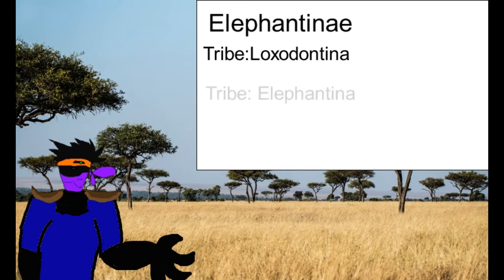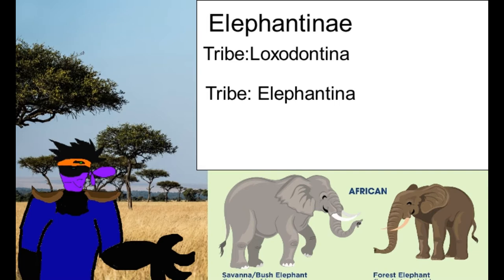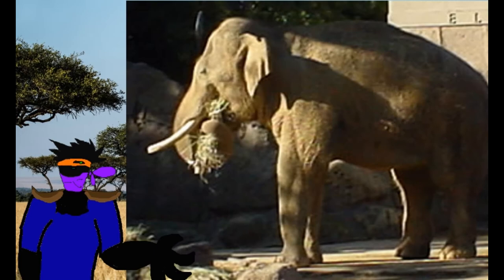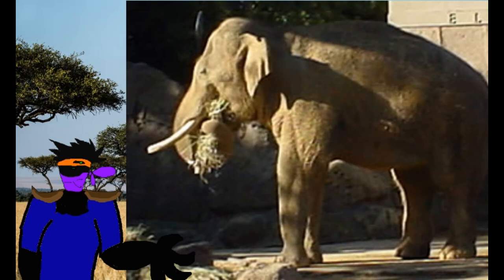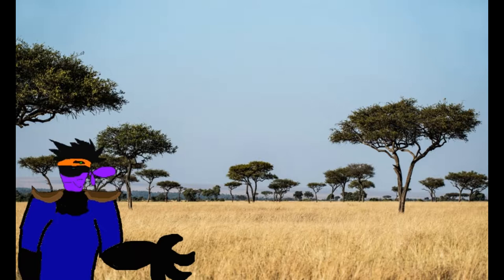From here, they diverged some four to six million years ago into their various lineages. That division led to two tribes — a taxonomic rank above a genus and below a family. The tribes are Loxodontina, the African elephants, and Elephantina, the Eurasian elephants. Elephantina was way more diverse, with three genera: Elephas, which includes the surviving Asian elephant; Paleoloxodon, which included the largest known land mammal of all time; and Mammuthus, the mammoths.